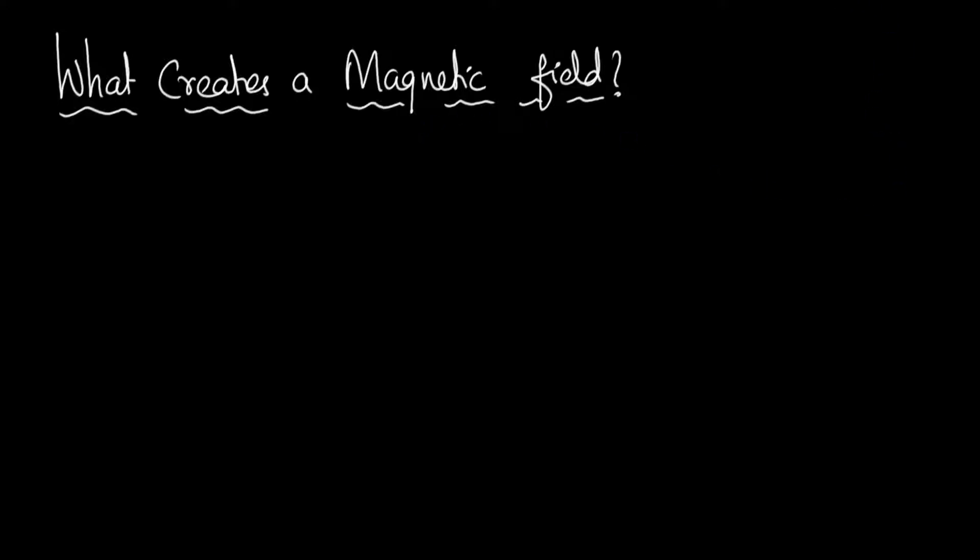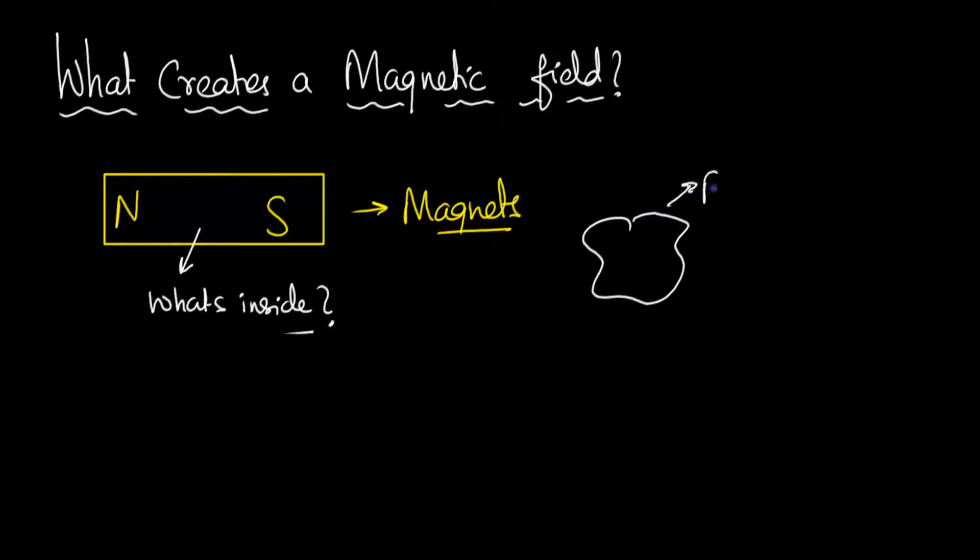At first the answer seems to be quite easy. Well of course, magnets. But then if you think about it a little bit more, you can ask a deeper question. What's inside a magnet that allows it to create a magnetic field? What's inside? What's so special about a magnet? Why can't other things, like for example if I have a rock over here, why doesn't that rock create a magnetic field? Why just a magnet?